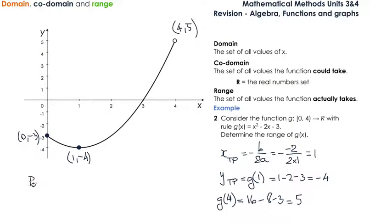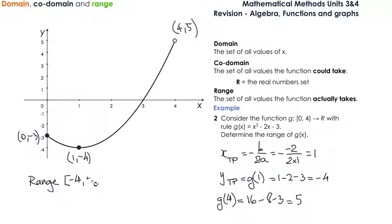So we can state that the range goes from the lowest value. The lowest value is negative 4, and that point is a dot, so we use a square bracket. It goes up to 5, but 5 is represented by a circle, so it has a round bracket. The range is [−4, 5).